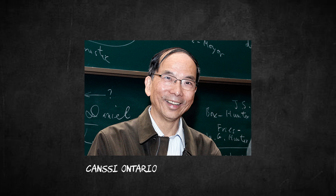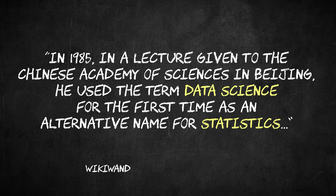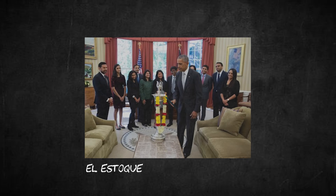In 1985, C.F. Jeff Wu used this term as an alternative name for a completely different field — statistics — in one of his lectures as well. There's some pretty killer foreshadowing here. The official title of data scientist was first proposed by DJ Patil at LinkedIn, who would go on to become the first US chief data scientist under Barack Obama.